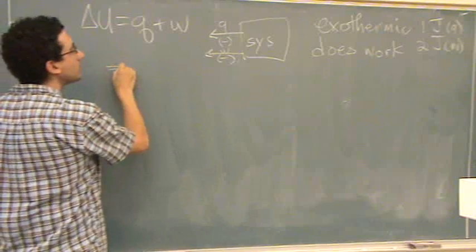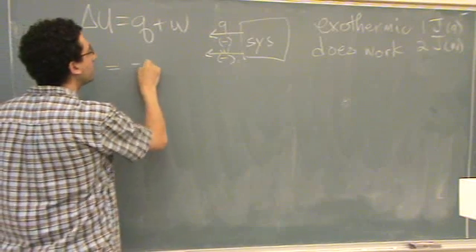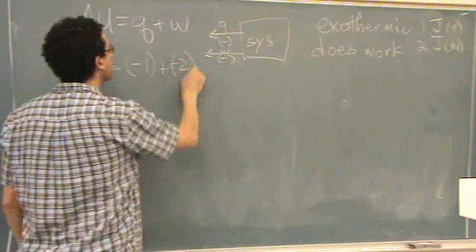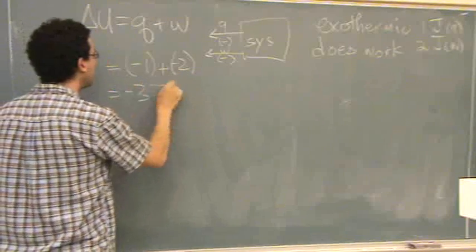So delta U is minus Q, which is minus one, plus W, which is minus two. Total of minus three joules.